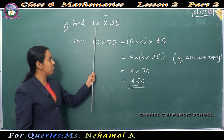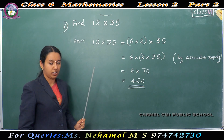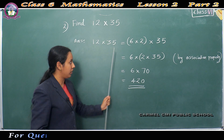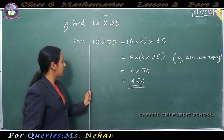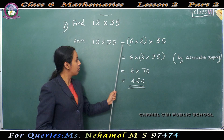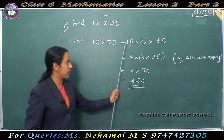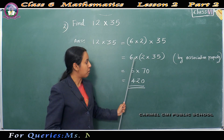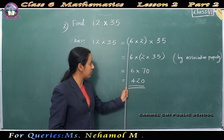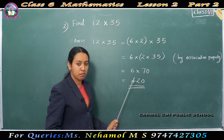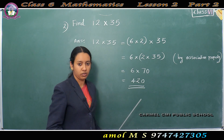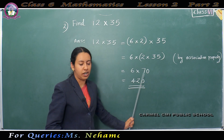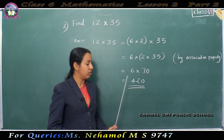Second question: find 12 into 35 without actual multiplication. By using associative property, 12 into 35 is equal to 6 into 2 into 35 — we can split 12 as 6 into 2. According to the associative property of whole numbers, we can multiply 3 whole numbers in any order, so 6 into (2 into 35) gives 6 into 70, which equals 420.